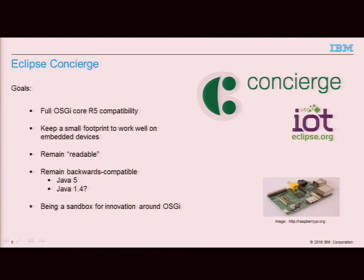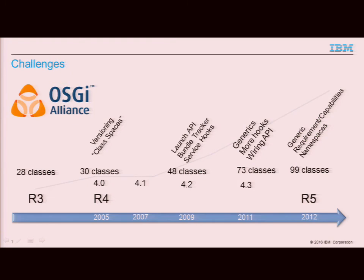So, we tried to get the full R5 compatible implementation while keeping all the beneficial properties that the old Concierge had. We were somewhat undecided whether we would have to be backwards compatible to Java 5 or 1.4. When we started, Java 8 wasn't released, so it seemed like a good idea to be compatible with 1.4 because on many embedded devices you would only get a 1.4 JME CDC implementation as the best Java machine that you could use.